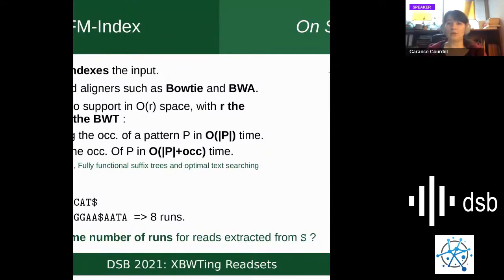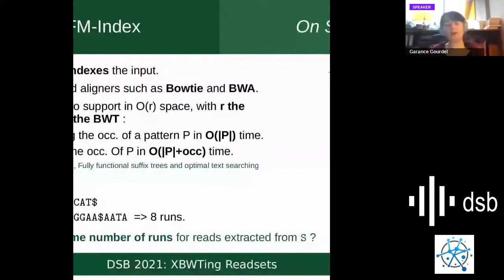All the compression in space is based on the number of runs in the BWT. If we take an example that is going to be our running example in this presentation — it's 'gata gata gata gata' — it has eight runs. The question we have is: could we have the same type of structure with similar performance based on the number of runs in the BWT, EBWT, or XBWT? And how can we have the smallest possible number of runs?